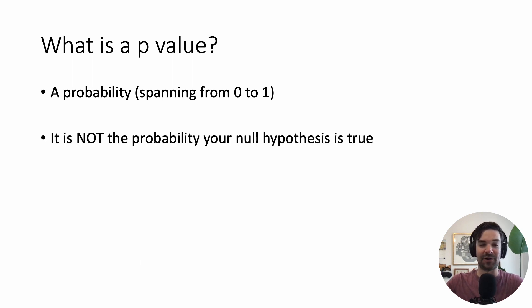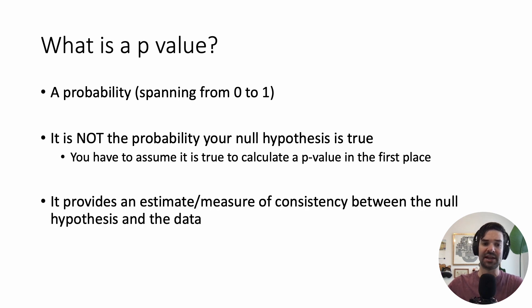It's also important to clarify what a p-value is not. So a p-value is not the probability your null hypothesis is true. No, no, no. You have to assume it is true to calculate a p-value in the first place. Instead, a p-value provides an estimate for the measure of consistency between the null hypothesis and the data that you observed in your study.